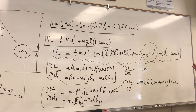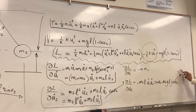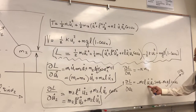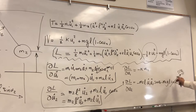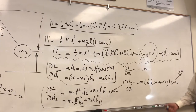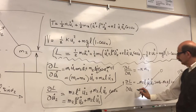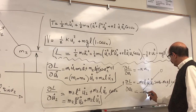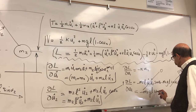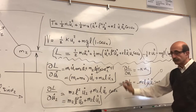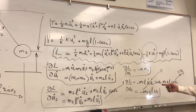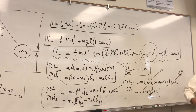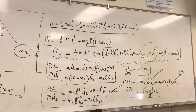Assuming small angles, sin(U2) ≈ U2. Also, the product U1-dot·U2-dot·sin(U2) is a quadratic term — since U1-dot and U2-dot are small, their product is very, very small and can be ignored. So the partial of L with respect to U2 simplifies to −M2·g·L·U2.